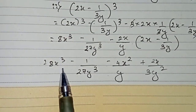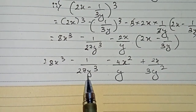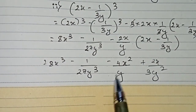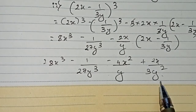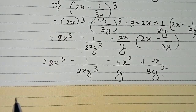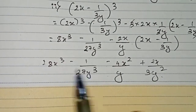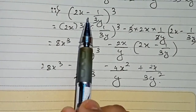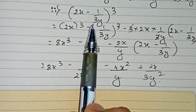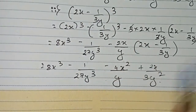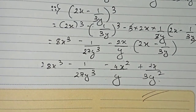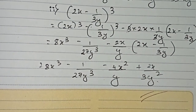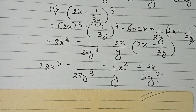So the final expanded form of 2x minus 1 by 3y whole cube is: 8x cube minus 1 by 27y cube minus 4x square by y plus 2x by 3y square. These are the final answers for this question. Thanks for watching this video and please subscribe to my channel for more solutions.